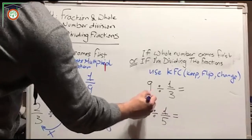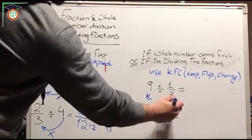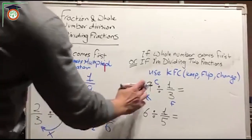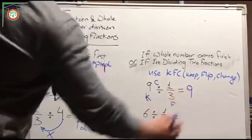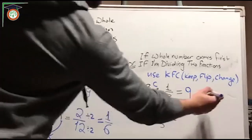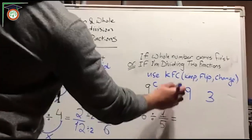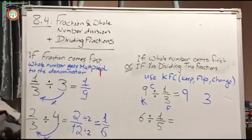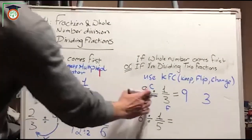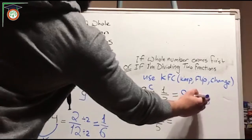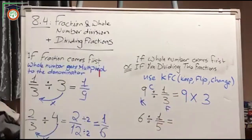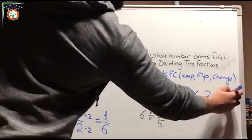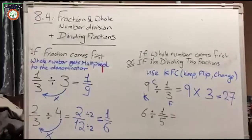I'm going to keep this number, flip this number, and change the sign. That means I keep the 9 as it is, I flip 1 over 3 — it becomes 3 over 1, which is just 3 — and I change the division sign to multiplication. So I have 9 multiplied by 3, which gives me 27.